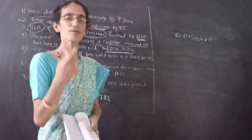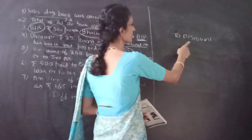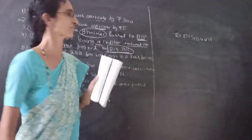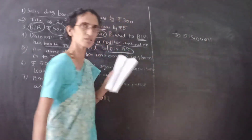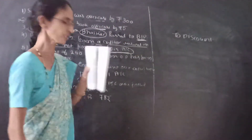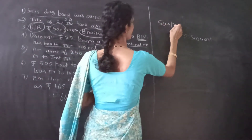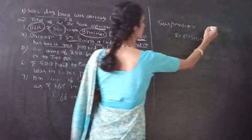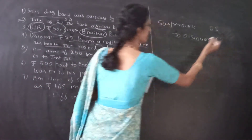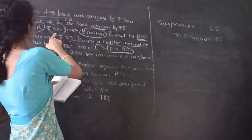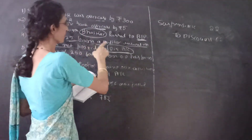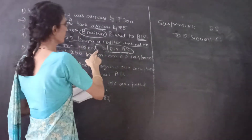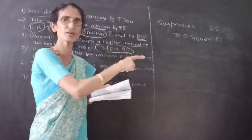Debit all expenses, credit all income — so discount received should be credited. It is a one-sided error, therefore the other side should be suspense account. The entry is: Suspense Account Dr. to Discount Account, ₹22. The narration is: Being discount not posted to discount account, rectified.